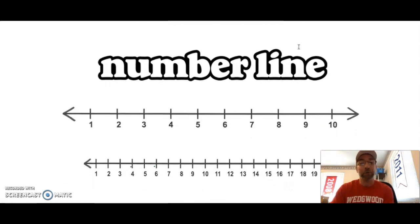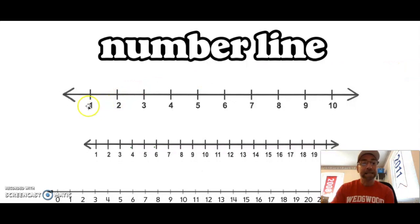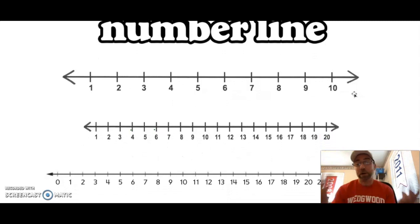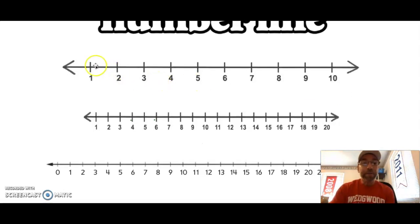We learned that we can have a number line and a number line has numbers on them. The number line has an arrow on each end because number lines go on and on forever. Number lines can start with any number, number lines can count by any number, but all the spaces are equal—they're the same distance.